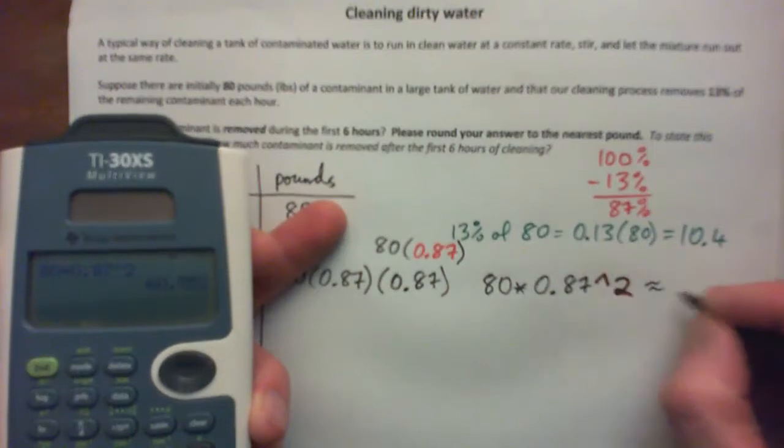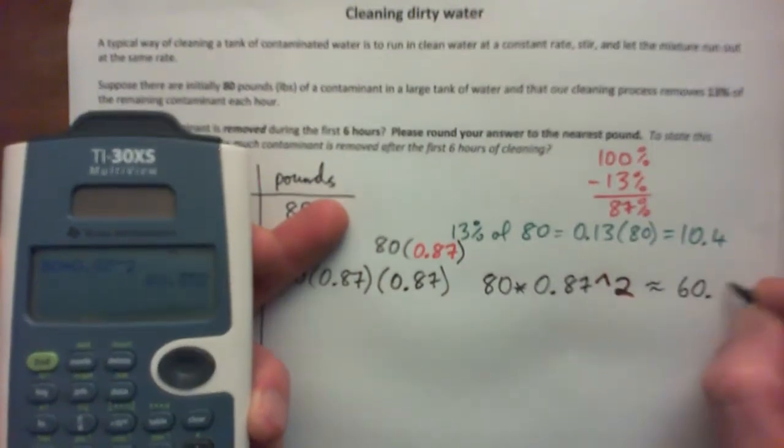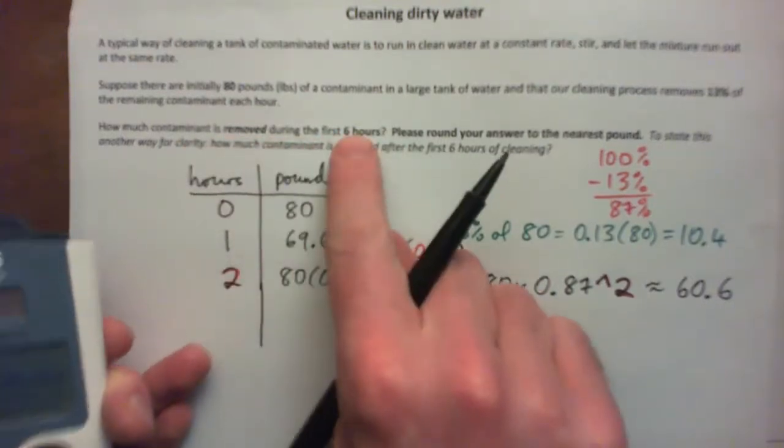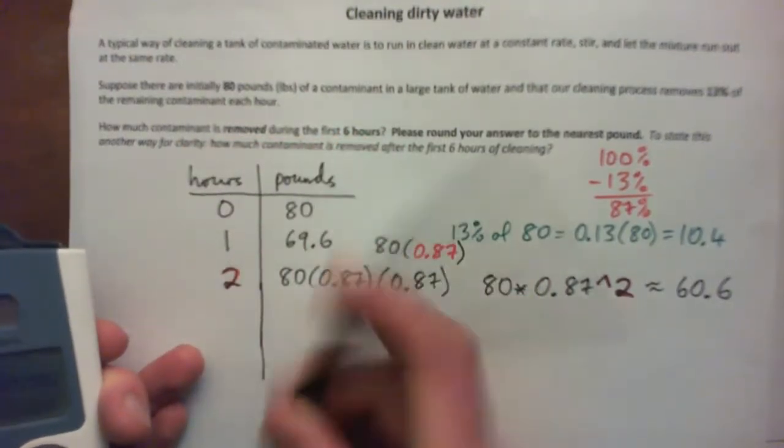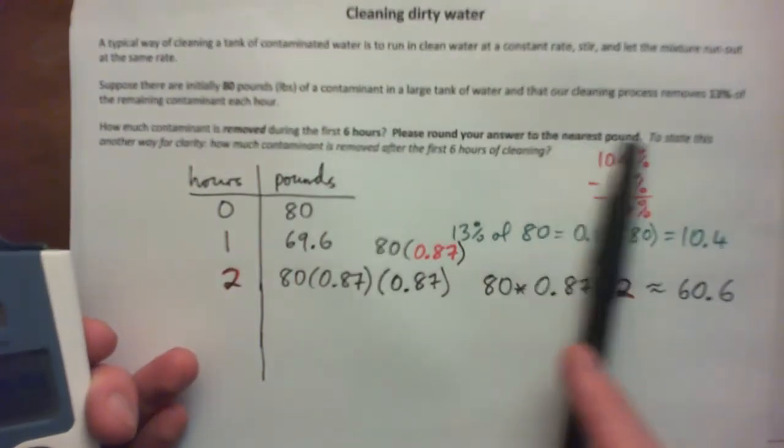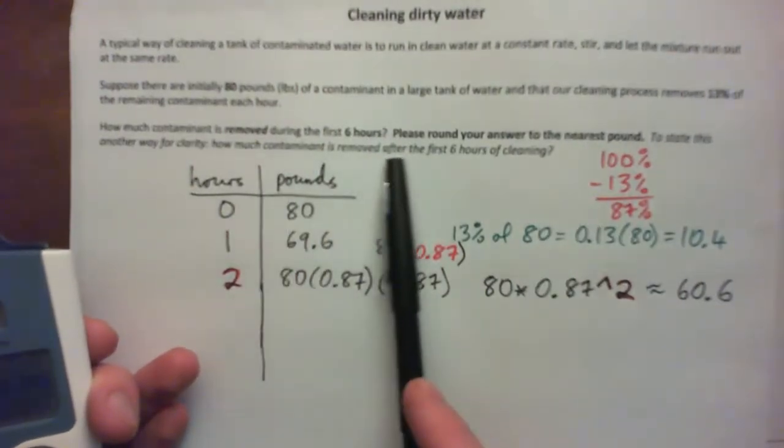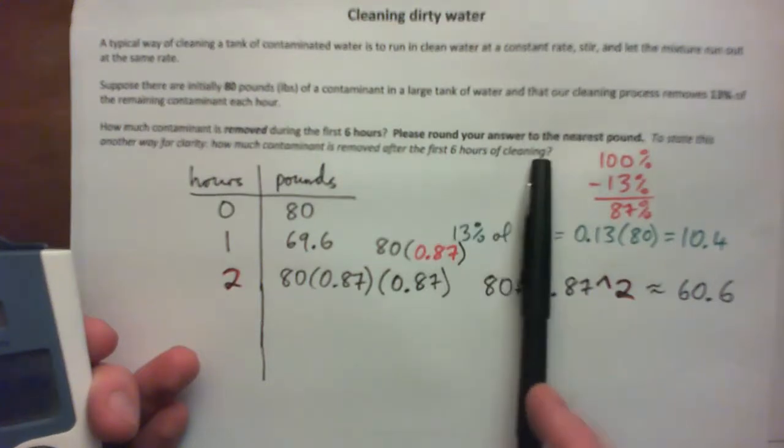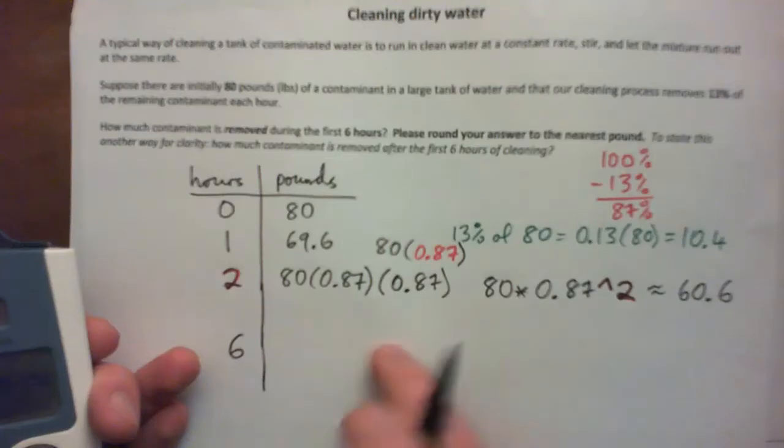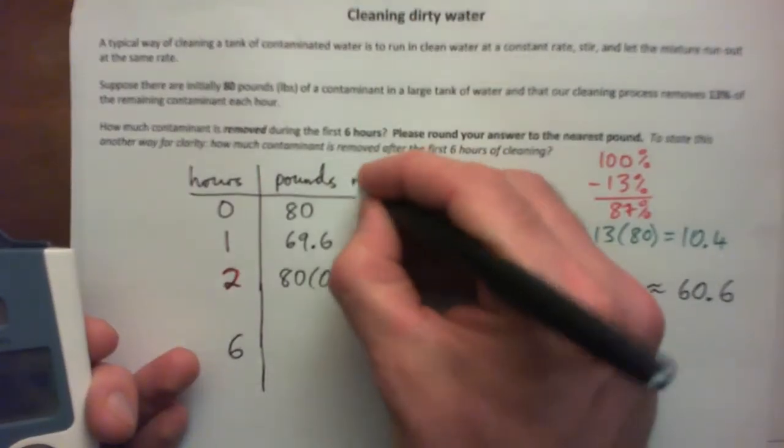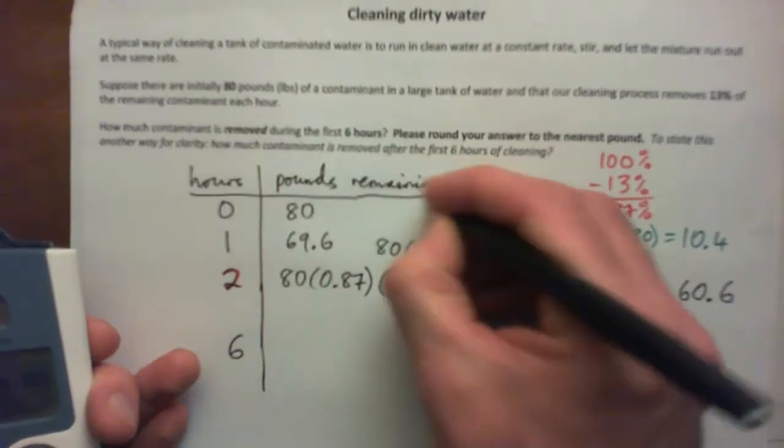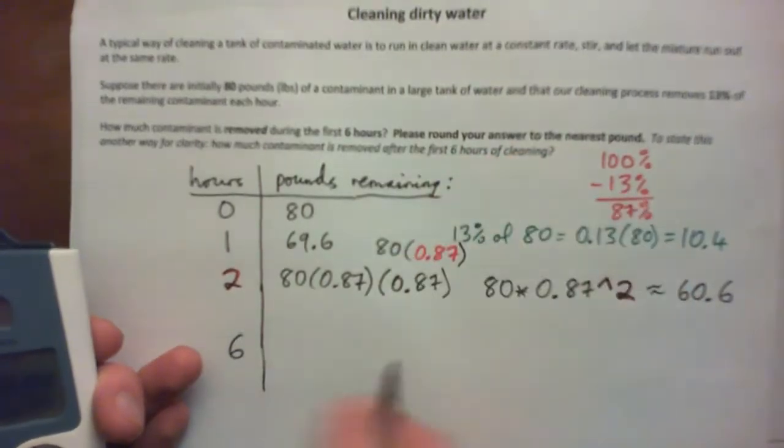But we're interested in six hours, because we want to know how much is removed during the first six hours. In other words, how much contaminant is removed after the first six hours of cleaning. So after six hours, how many pounds, and this is pounds remaining.